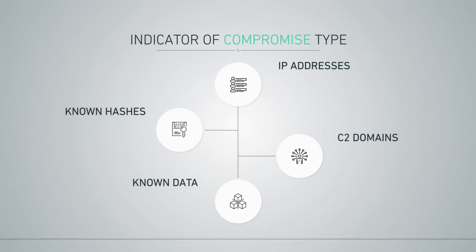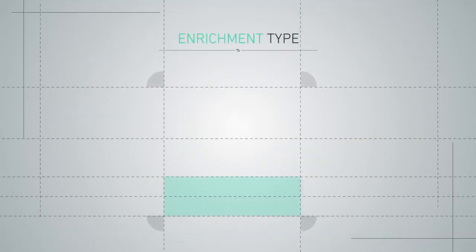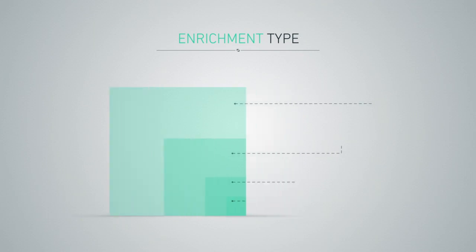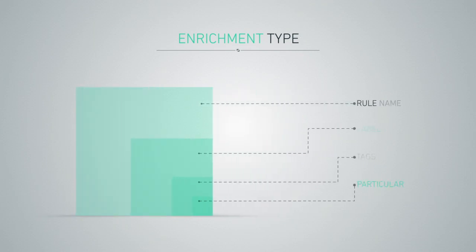When the product captures telemetry data and enriches it with additional information like rule name, labels, tags, or the particular technique, it is given an enrichment type. This is always good to have as it provides further clues for security teams and allows for an easier analysis.